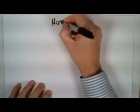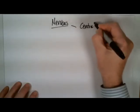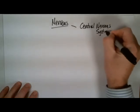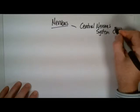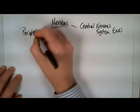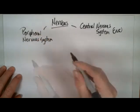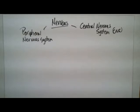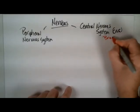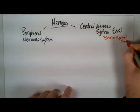The nervous system is divided into two broad categories. We have what's called the central nervous system, referred to as the CNS, and then you have the peripheral nervous system. The central nervous system is the brain and the spinal cord — that's it. There are other tissues associated, but it's just the brain and the spinal cord.